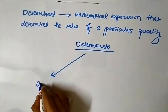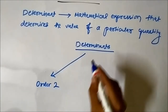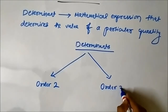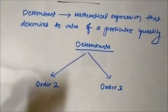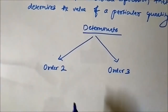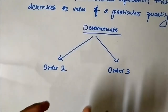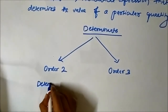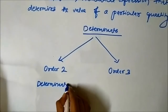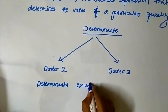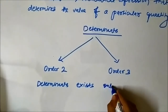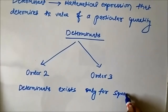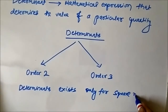Mostly we have to deal with determinants of two types: determinants of order two and determinants of order three. Another important thing is the relationship between determinants and matrices — determinants exist only for square matrices.